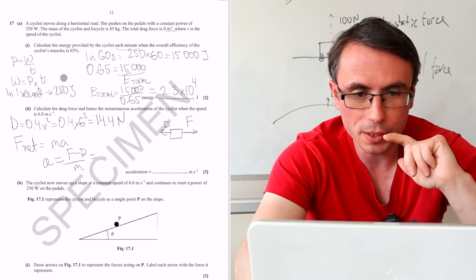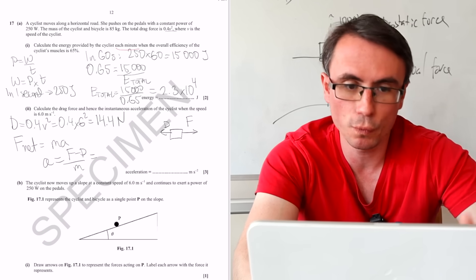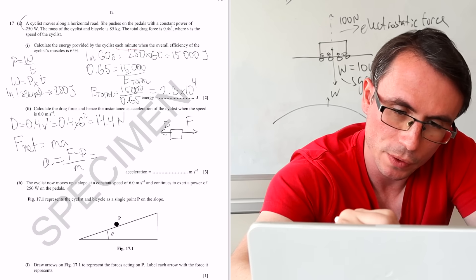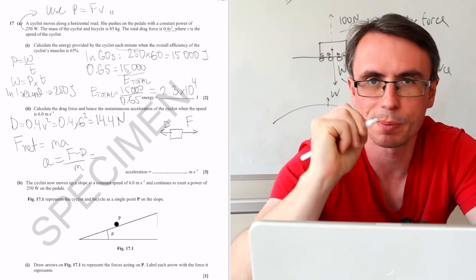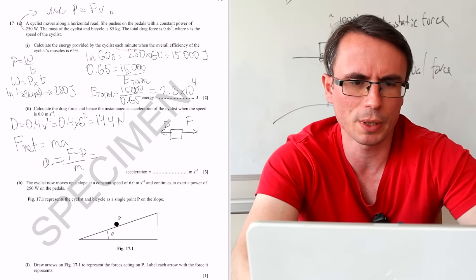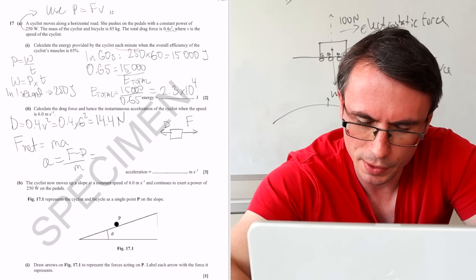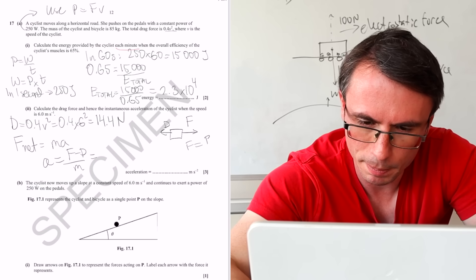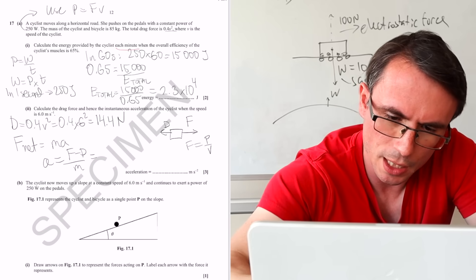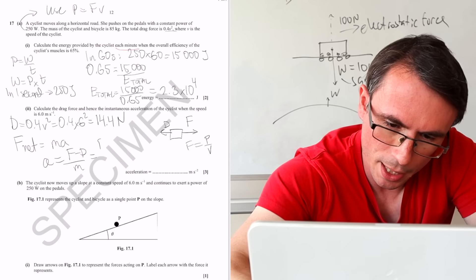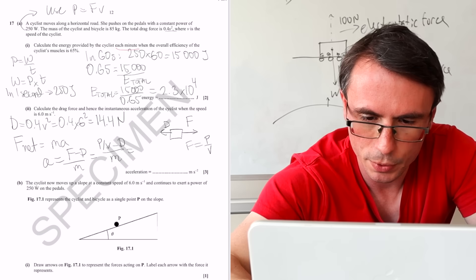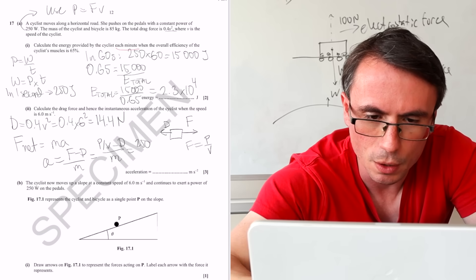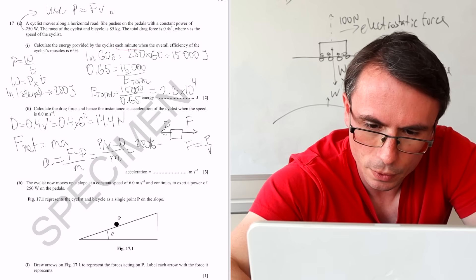Another tip, if you get a mechanics question with power, always use P equals F multiplied by V. This normally happens whenever we get power in mechanics. This means that the force is just going to be P over V, so we're going to get power over V, take away D over M, which is going to be 250 over 6, take away the drag force, 14.4, divided by the mass, which is 85.